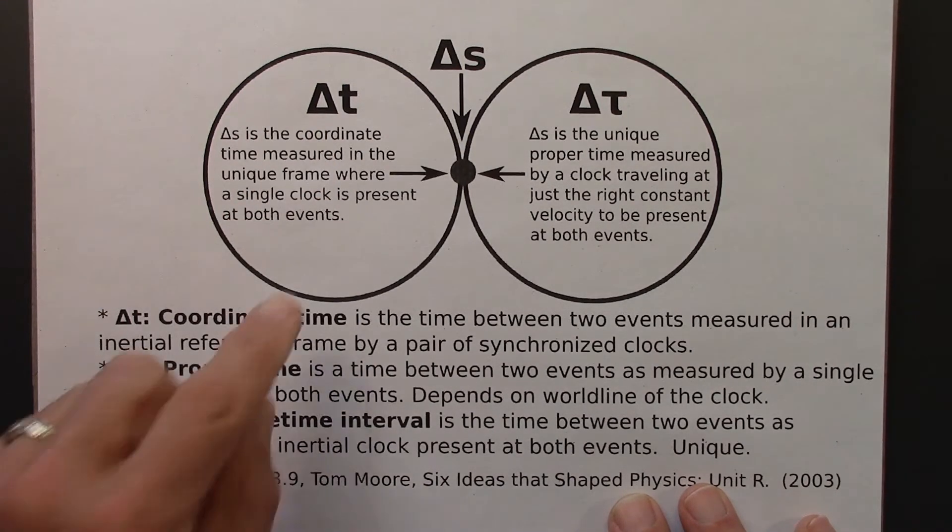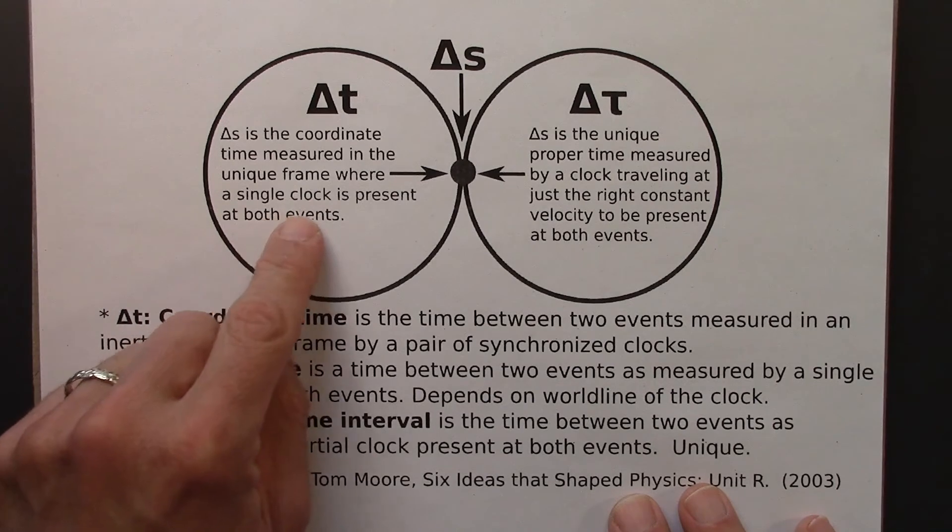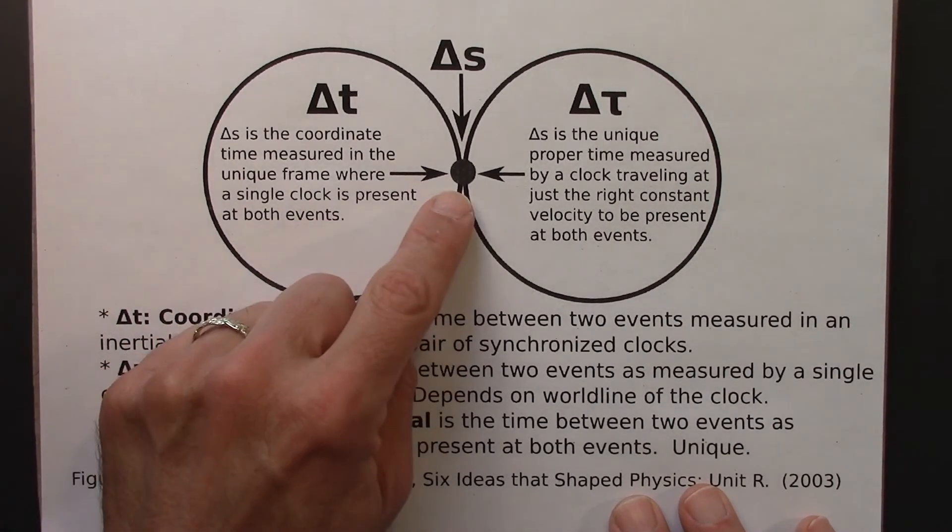But there's a special coordinate time interval where you have a single clock that happens to be present at both events. And then you're measuring the spacetime interval.